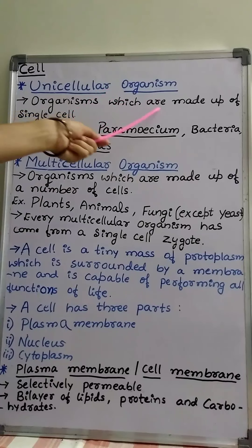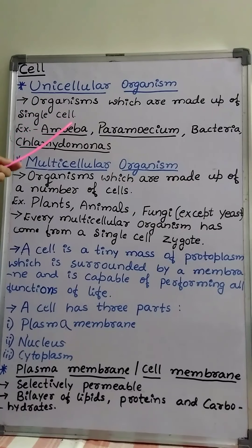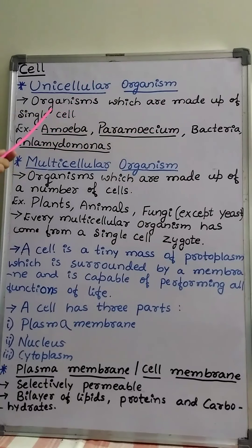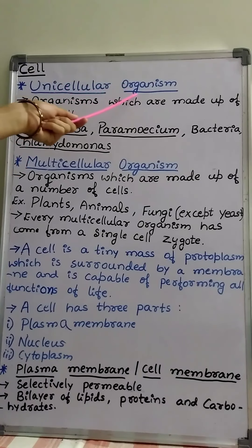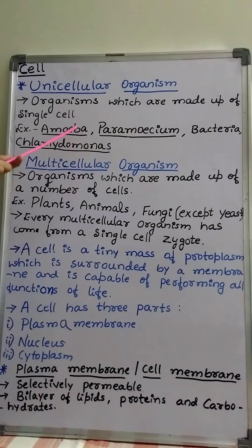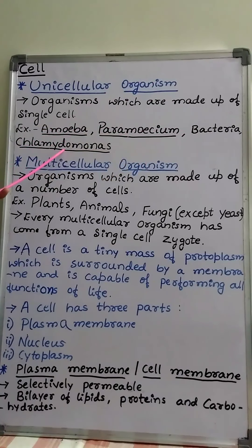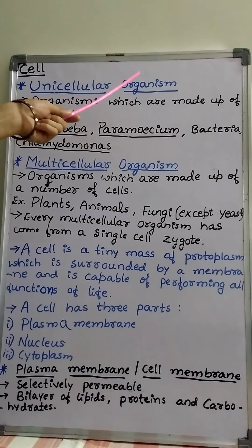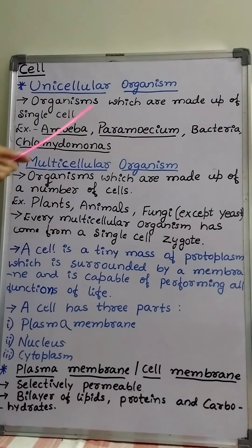Organisms which are made up of a single cell are called unicellular organisms. For example, amoeba, paramecium, bacteria, chlamydomonas, etc. are unicellular organisms which are made up of a single cell.